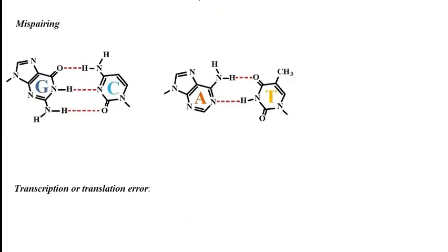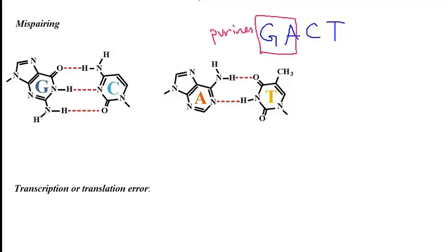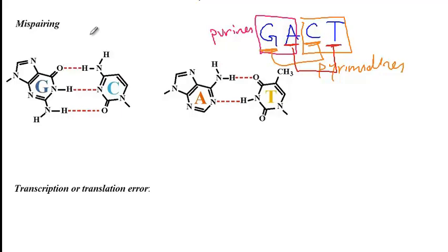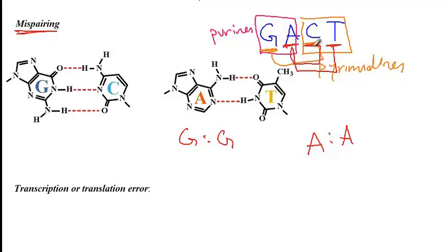Another cause of genetic variation is mispairing. We know that purines are supposed to always pair with pyrimidines — G pairs with C and A pairs with T. But in reality, there could be some mispairing. For instance, a purine could pair with another purine, like A-A or G-G pairing. Alternatively, we could have aberrant pairing between a purine and a pyrimidine, like A pairing with C. These mispairing events happen during DNA replication when a wrong nucleotide is incorporated.